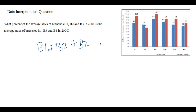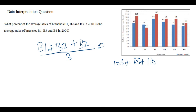Let's calculate the average sale of branches 1, 2, and 3 in 2001. Branch 1 was 105, branch 2 was 65, and branch 3 was 110. Adding these: 105 plus 65 plus 110 equals 280. Divide by 3 because we are calculating the average of three branches, so 280 divided by 3 equals approximately 93.8.